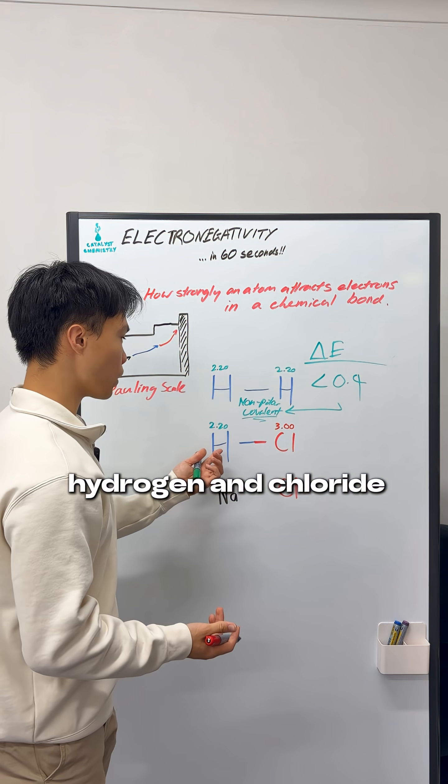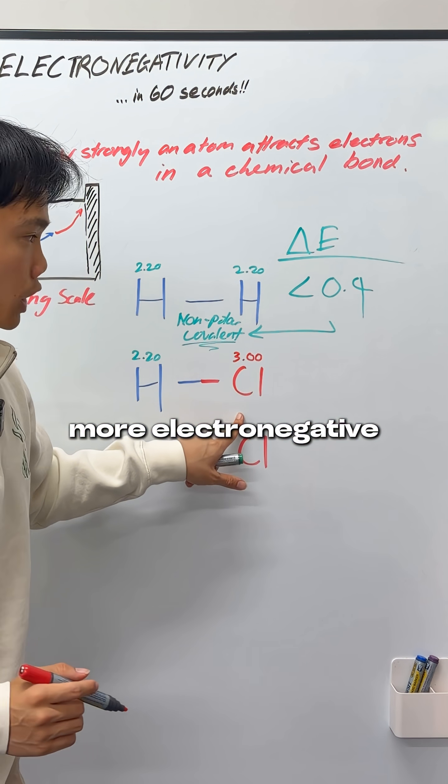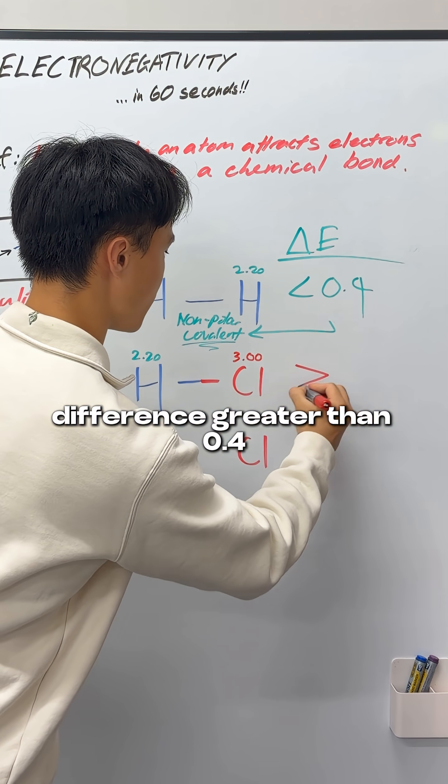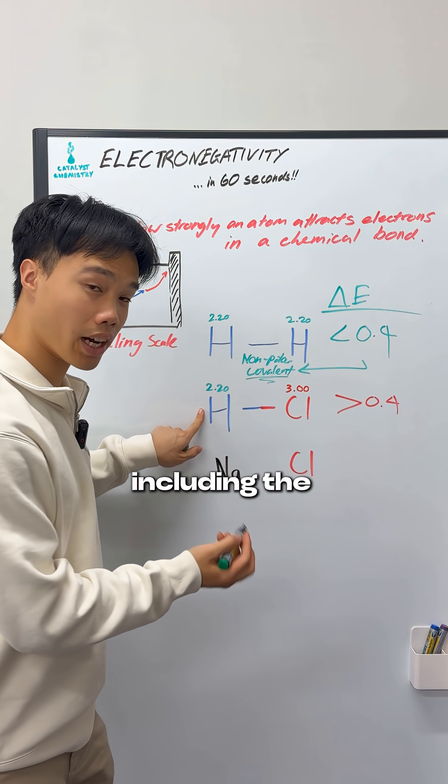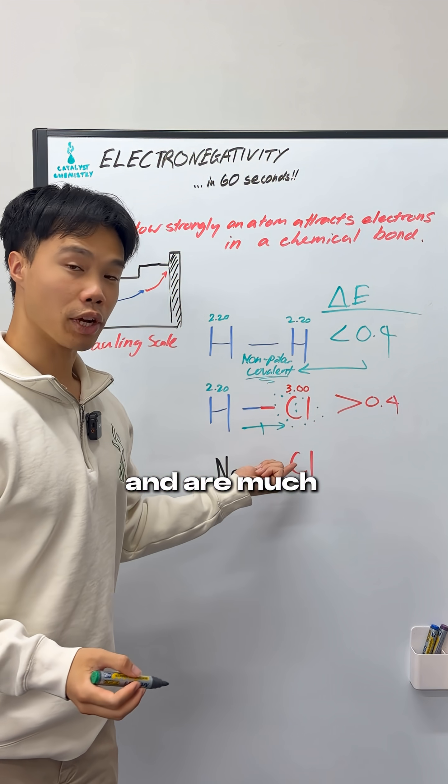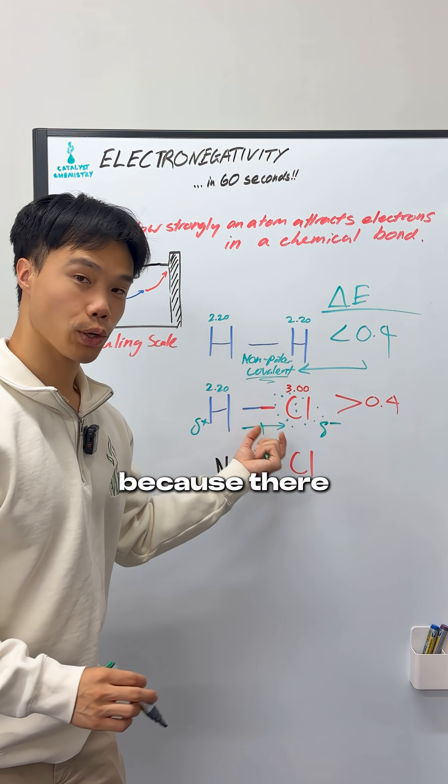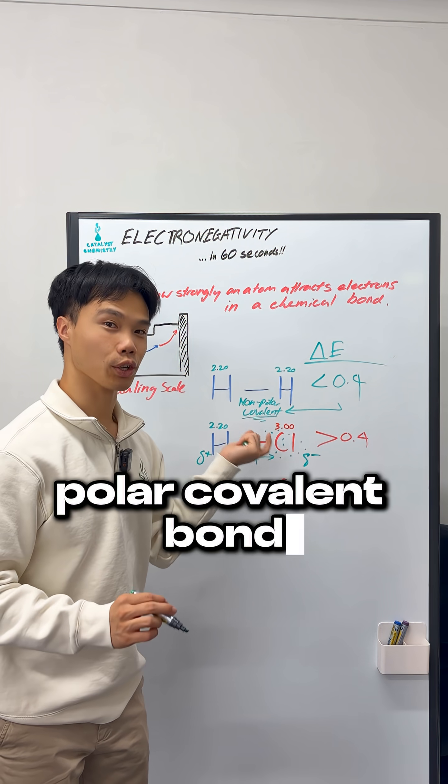Now, when you look at hydrogen and chloride, what do you notice between the two electronegativities? Chloride is much more electronegative, in fact, a difference greater than 0.4. This means all the electrons, including the hydrogen's electron, are pulled in towards the chloride and are much more likely to exist there. Because there is a pole on one side of the bond, we call this a polar covalent bond.